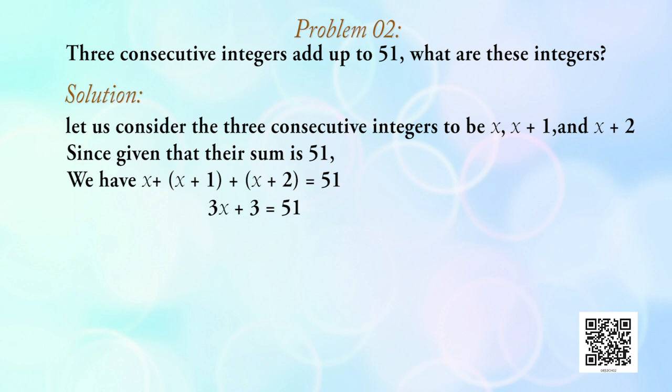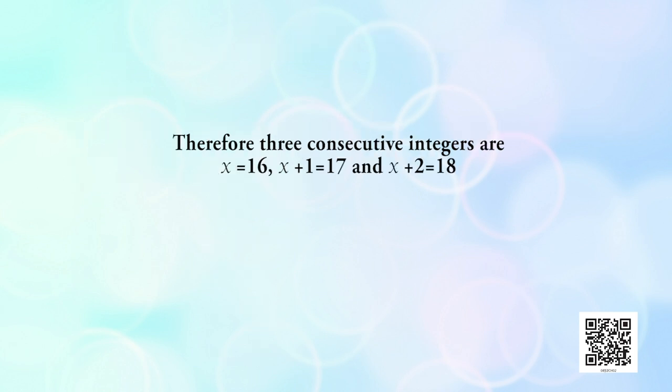Adding all the x terms: 3x + (1 + 2) = 3, so 3x + 3 = 51. Transposing 3: 3x = 51 − 3 = 48. Dividing both sides by 3: x = 48/3 = 16. Therefore the three consecutive integers are x = 16, x + 1 = 17, and x + 2 = 18. Verification: 18 + 17 = 35 and 35 + 16 = 51. So our answer is correct.